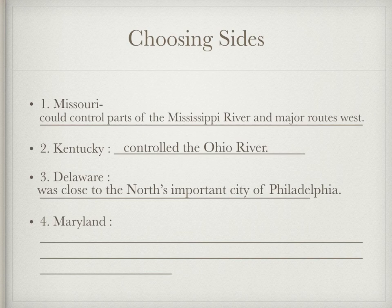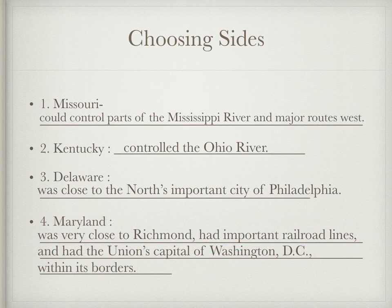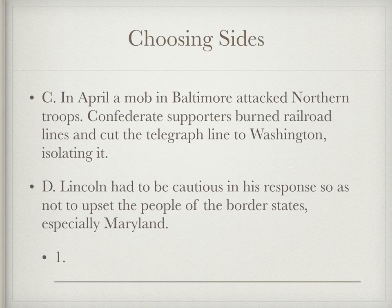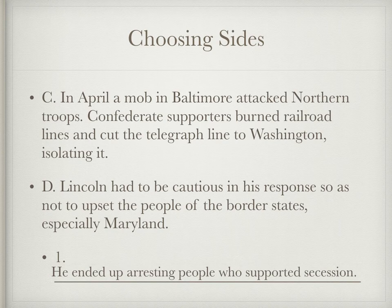Maryland is probably the most important border state of all. It had a lot of important railroad lines and it bordered DC. Imagine if Maryland had seceded — the capital would have been surrounded by a Confederate state. An example: in April 1861, a mob attacked northern troops, rioted, burned railroad lines, and cut telegraph lines to Washington. Lincoln responded by using his presidential power to suspend constitutional rights and arrested anyone in Maryland who supported secession.